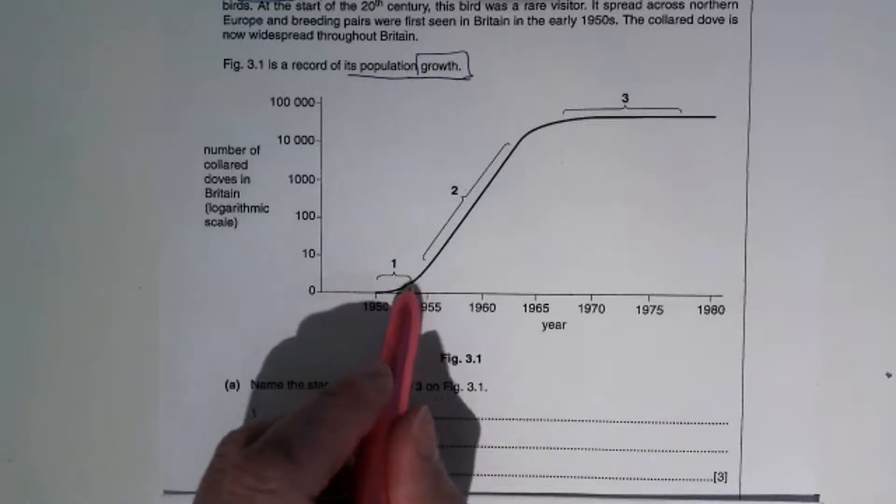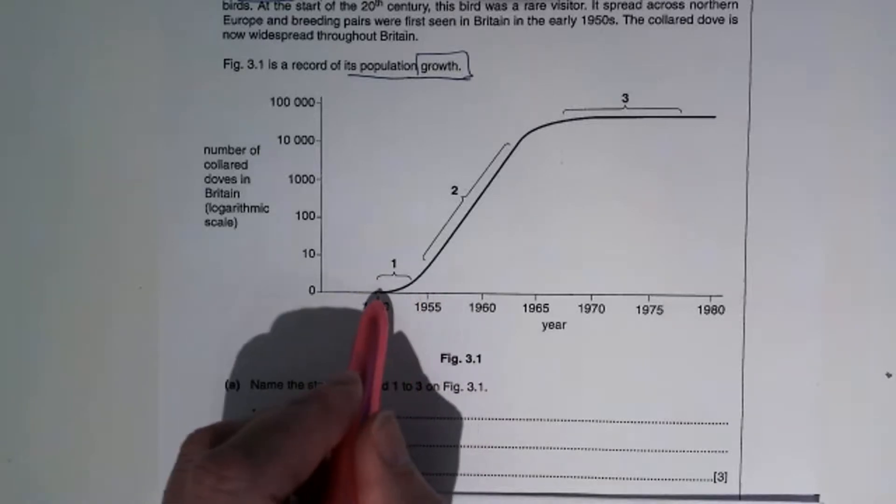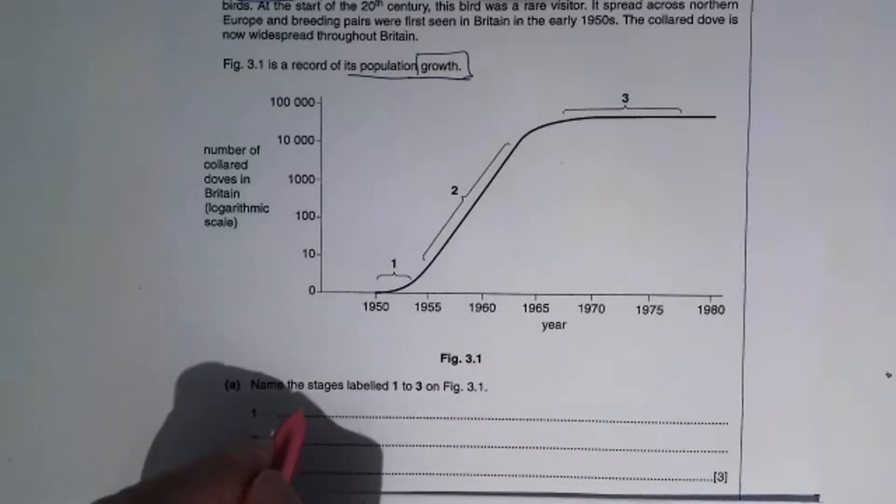So stage one. At this point, we've got slow population growth. The population is small, so reproduction rates are low. So growth is low. And we call that phase the lag phase.